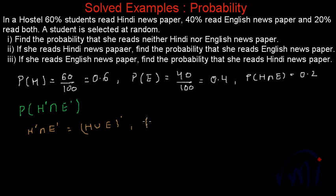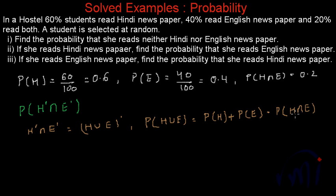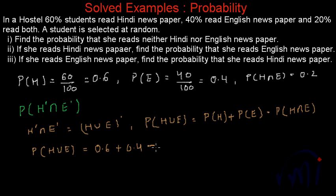We also have that the probability of H union E equals the probability of H plus the probability of E minus the probability of H intersection E. This comes directly from the cardinal numbers of two intersecting sets. So the probability that a randomly selected student reads either Hindi or English newspaper is 0.6 plus 0.4 minus 0.2, which equals 0.8.